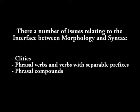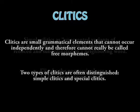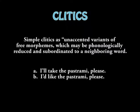There are kinds of issues about morphology and syntax: clitics, phrasal verbs with separable particles, and phrasal compounds. The first is clitics. Clitics are small grammatical elements that cannot occur independently and therefore cannot really be called free morphemes. There are two types of clitics often distinguished: simple clitics and special clitics. Simple clitics are an accented variant of a free morpheme which may be phonologically reduced and subordinate to a neighboring word.